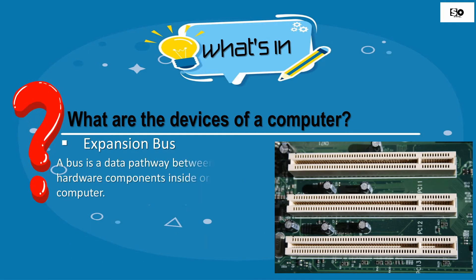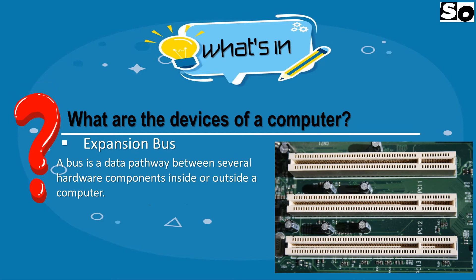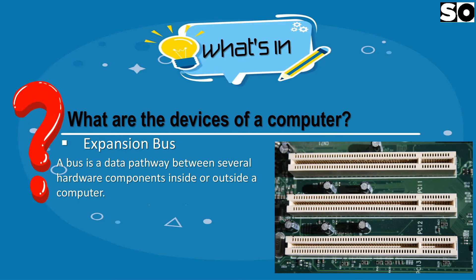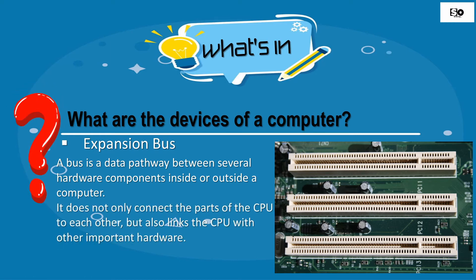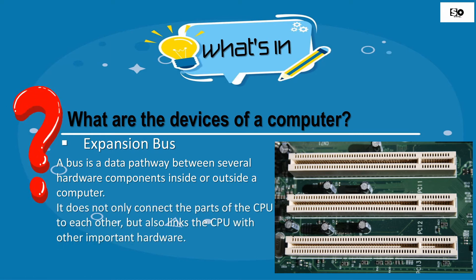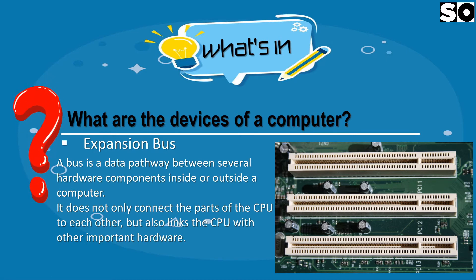Expansion Bus — a bus is a data pathway between several hardware components inside or outside a computer. It does not only connect the parts of the CPU to each other, but also links the CPU with other important hardware.